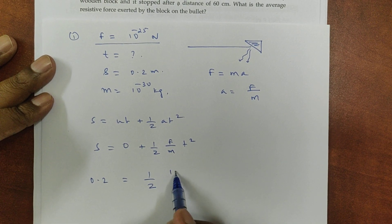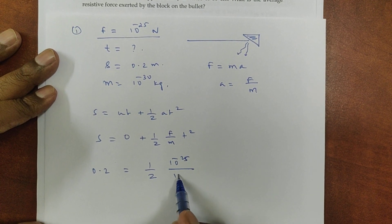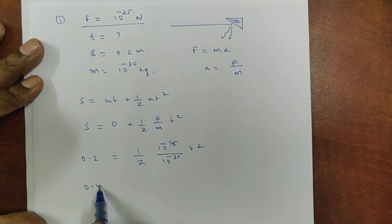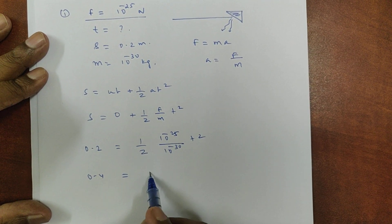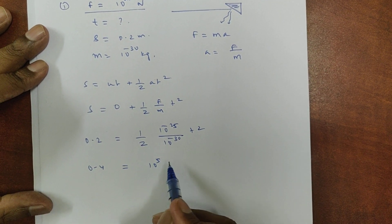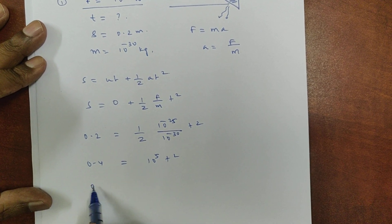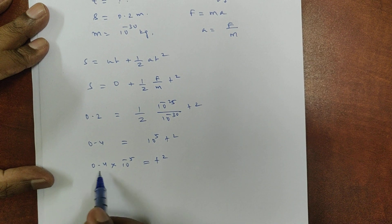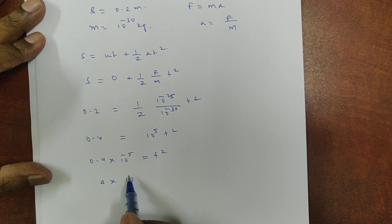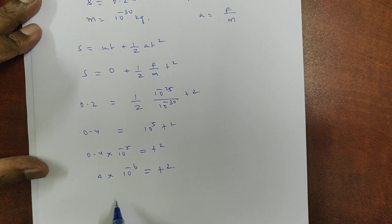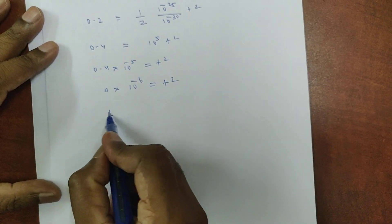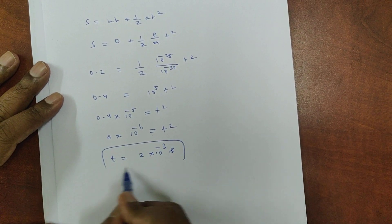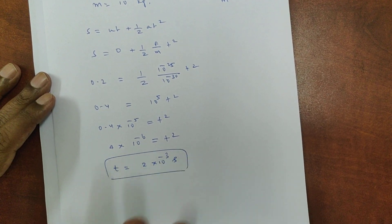Substituting numerical values: s = 0.2, so 0.2 = (1/2) × (10^-25 / 10^-30) × t². This gives 0.4 = 10^5 × t², so t² = 0.4 × 10^-5 = 10^-5 approximately, giving t = 10^-3 seconds. That is 2 milliseconds — the answer to this problem.